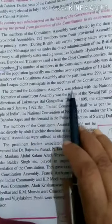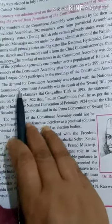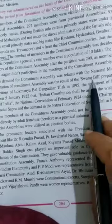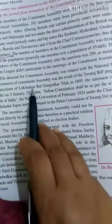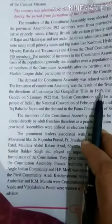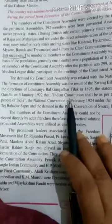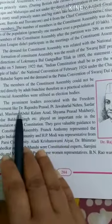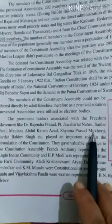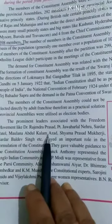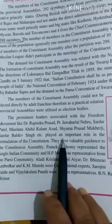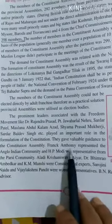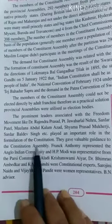The demand for a Constituent Assembly was related to the national movement. The formation of the Constituent Assembly was the result of the Swaraj Bill prepared under the direction of Lokmanya Bal Gangadhar Tilak in 1895. Since 1895, our leaders had been demanding a Constituent Assembly. Prominent leaders associated with the freedom movement like Dr. Rajendra Prasad, Pandit Jawaharlal Nehru, Sardar Patel, Maulana Abul Kalam Azad, Shyama Prasad Mukherjee and Sardar Baldev Singh played an important role in the formation of the Constitution.